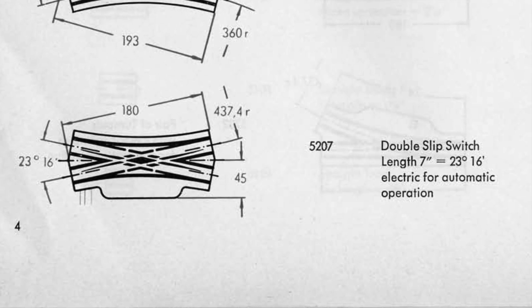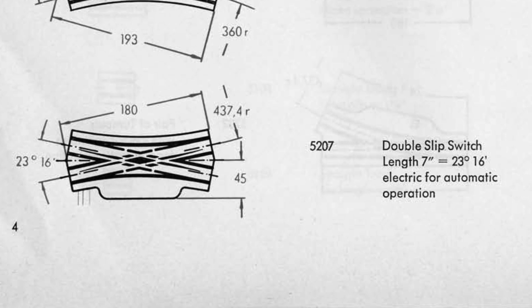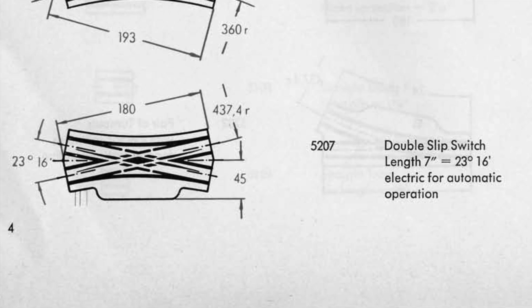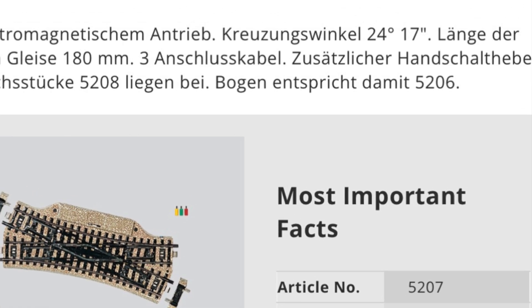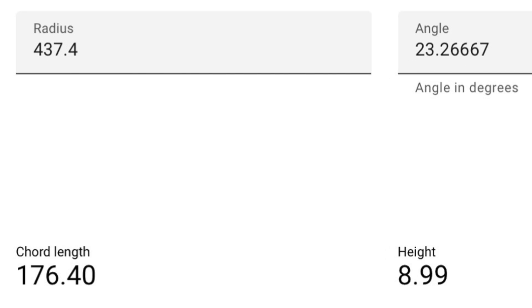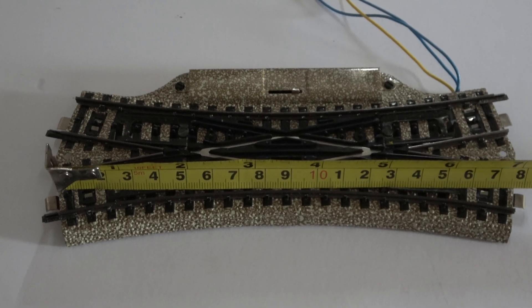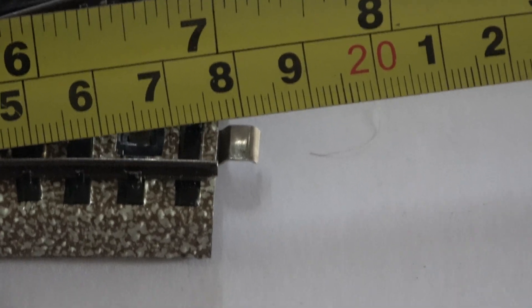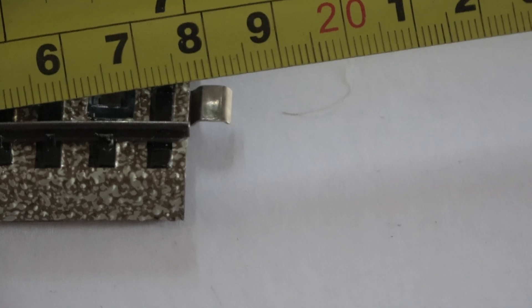Now let's look at the crossing curve. Märklin states an angle of 23 degrees 16 minutes for a radius of 437.4 millimeters in the track plan books and that is 1 degree 1 minute less than in the catalogues. The maths tell us the chord length should be 176.4 millimeters. Here's a real 5207 crossing and the tape measurer shows a measurement of just over 176 millimeters, which is close enough. So the angles of the turnout and crossing are indeed different, but the curvature is identical.